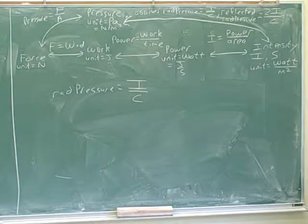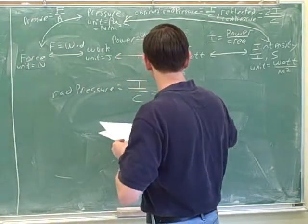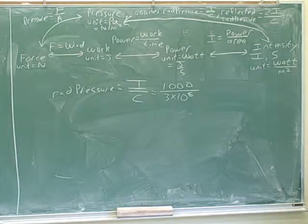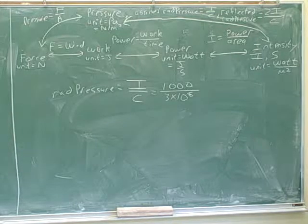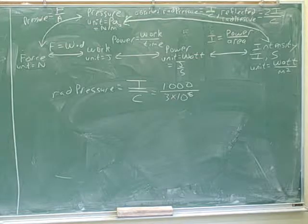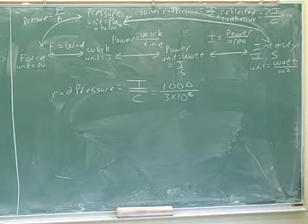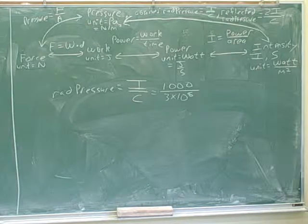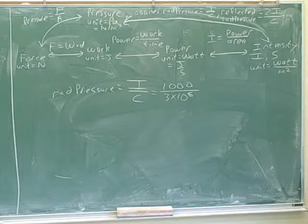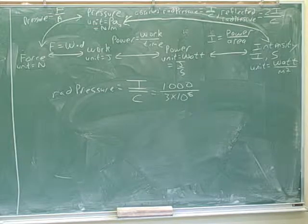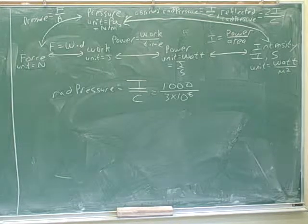So now I'll give you the radiation pressure. 1000 over 3 times 10 to the 8. So 1 over 30,000, something like that. Do you get to use a calculator on the test? Yeah. Oh, you might as well do that. Yeah, it looks like that calculation wasn't quite coming out right.